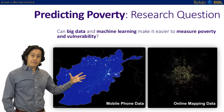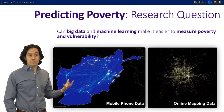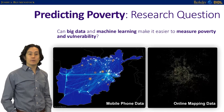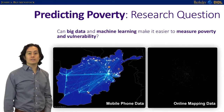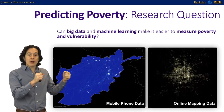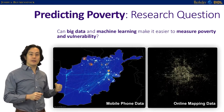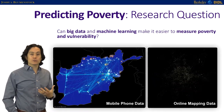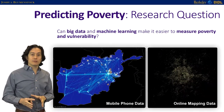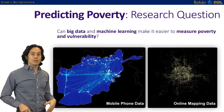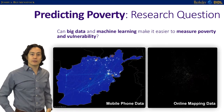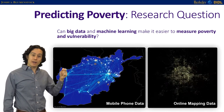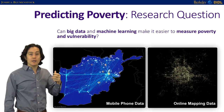The data we're bringing to bear includes mobile phone data from a single country. This is a map of Afghanistan, and we've worked with the Afghan telecommunications operator to access and analyze their data. What you're seeing is an animation of one day's mobile phone activity — the geographic connections between Kabul, Herat, Kandahar, and Mazar Sharif. On the right is similar data from Beijing, where you can see the structure of the ring roads surrounding the city center.